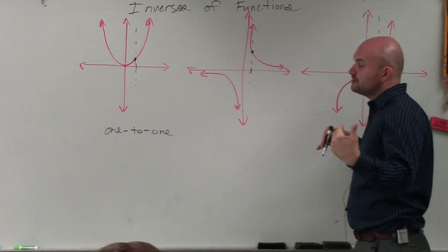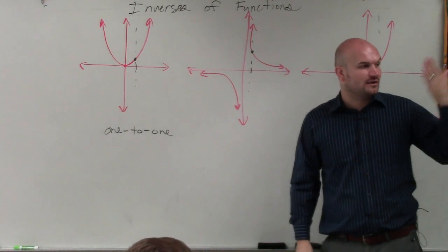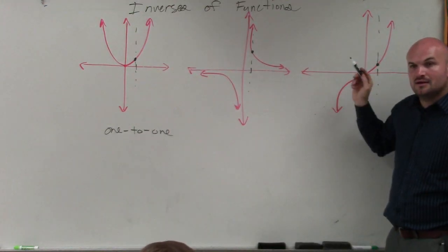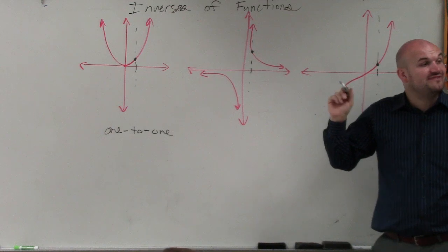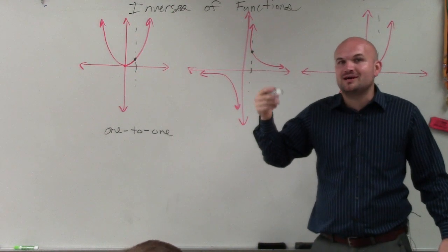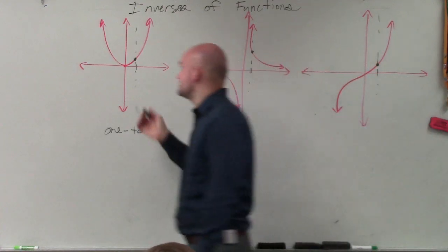So remember, if we're determining a function and we said every input had exactly one output, then we use the vertical line test, right? Now, if we are going to determine if every output has exactly one input, then we're going to want to use the horizontal line test.